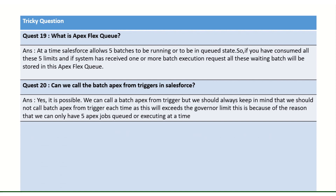What is the Apex Flex Queue? Since Salesforce can only process five batches in parallel at a time, any additional batch beyond five goes into the Apex Flex Queue, where it waits. Once one of the active batches finishes, the next one from the flex queue gets picked up for processing.